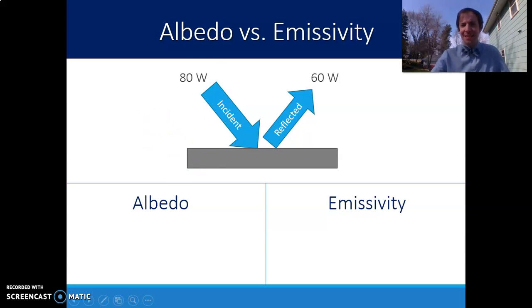If we were to see this as an example, we say that incident, we have 80 watts of power. And then let's say that 60 watts of that are reflected. Very simple numbers to do an illustration here. To calculate the albedo, we're basically just going to take 60 divided by 80, the amount that is reflected, divided by the amount that was incident in the first place.